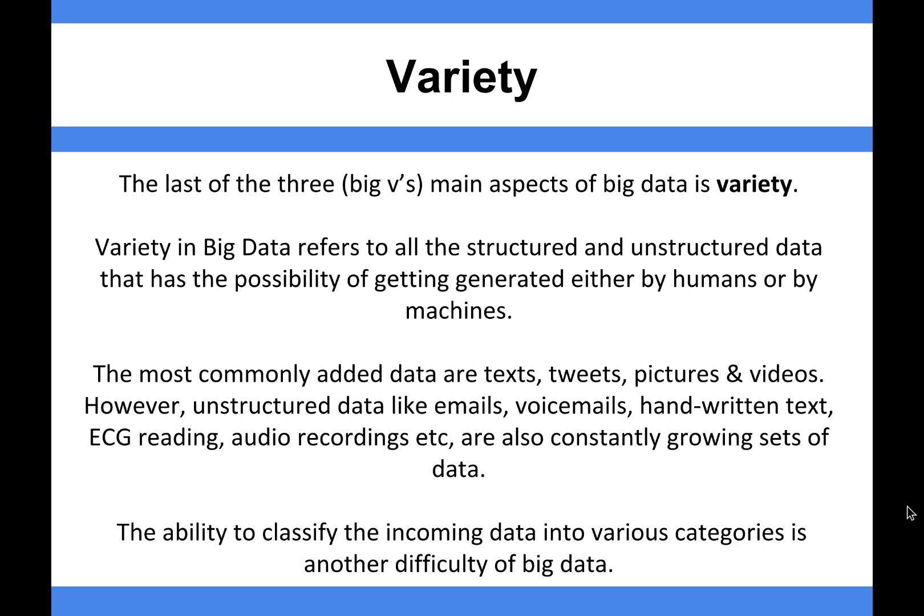The last of the main aspects of big data is variety. Variety in big data refers to all the structured and unstructured data that has the possibility of getting generated either by humans or by machines. What we're trying to highlight here is all the different types of data going into these data sets — whether structured or unstructured — and why this variety is an issue.